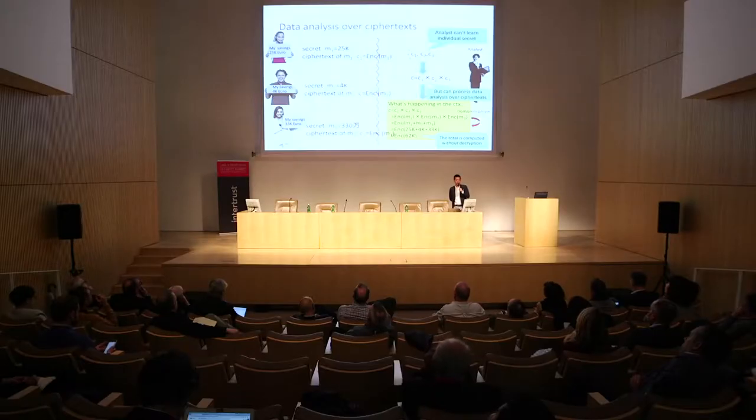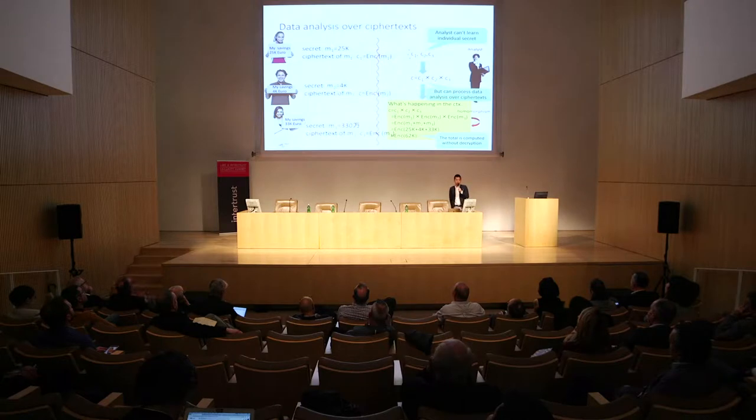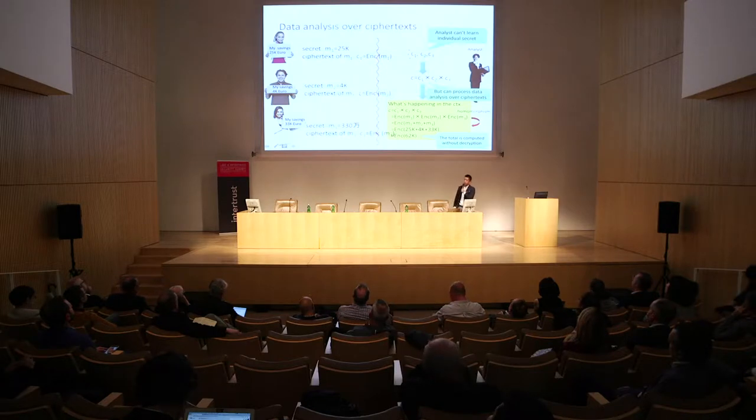Here is a demonstration of how we can do data analysis over ciphertexts. We have three users, each with secret information — specifically, the amount of their savings. The first has 25k euro, the second has 4k euro, and the last has 33k euro. This is secret information for each of them, and what the analyst wishes to learn is the average amount of savings.